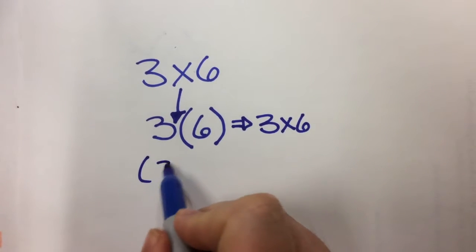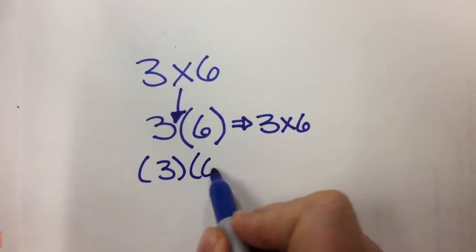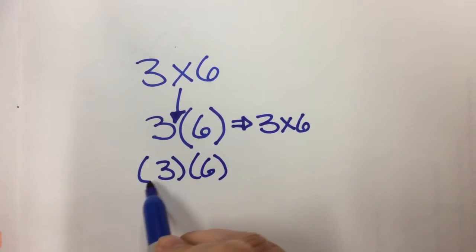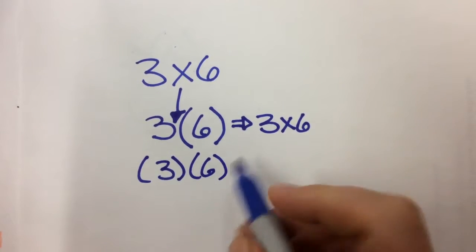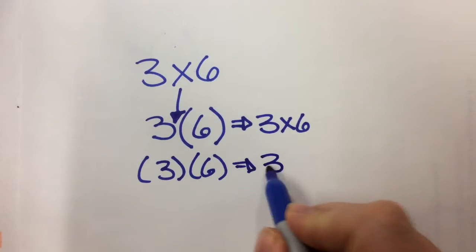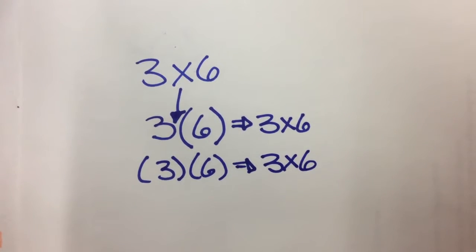Sometimes you might see both numbers inside the parentheses like this. But again, the same thing. When we see two numbers next to each other like this, that really means multiply. So again, this is still 3 times 6.